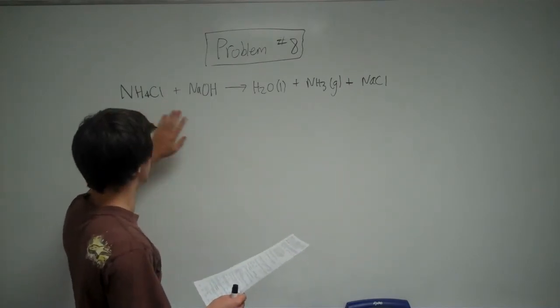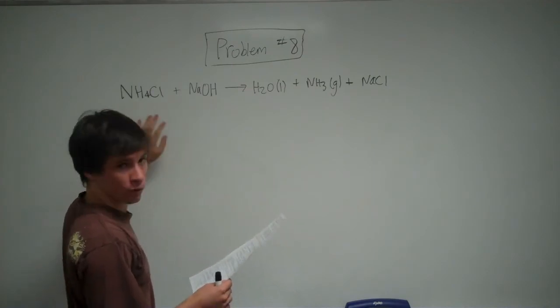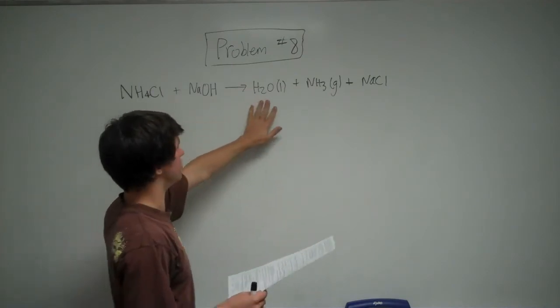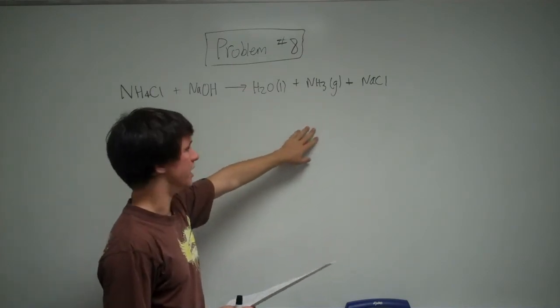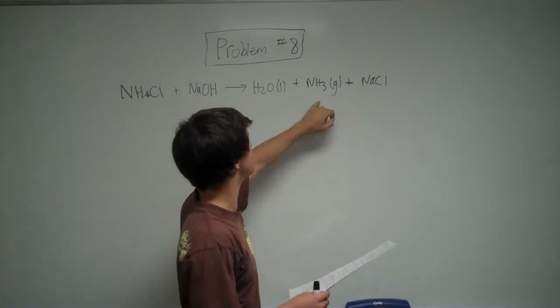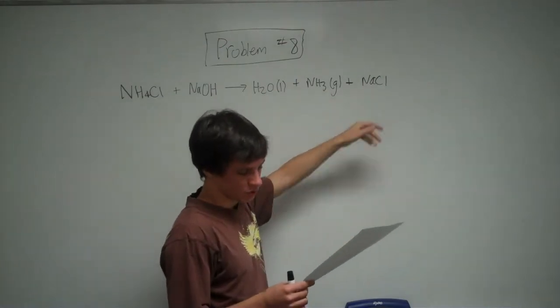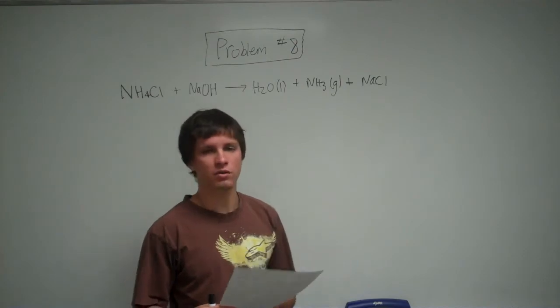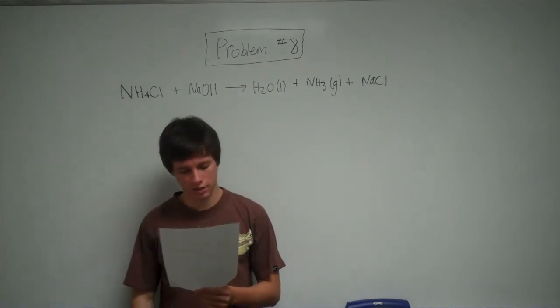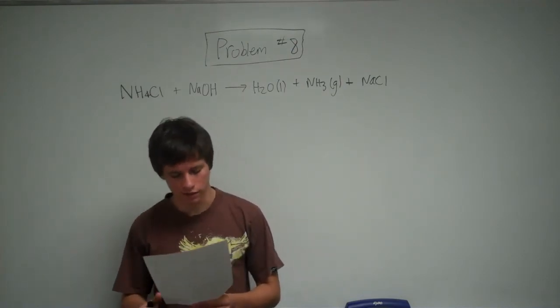So I've written that here: NH4Cl plus NaOH. Those are both aqueous. It produces liquid water plus ammonia gas and NaCl, which is also aqueous. So what you do when you want to write a complete ionic equation is you basically break up all the aqueous compounds.